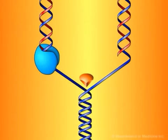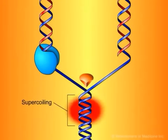As the replication forks move forward, positive superhelical twists in the DNA begin to accumulate ahead of them. In order for DNA replication to continue, these superhelical twists must be removed.